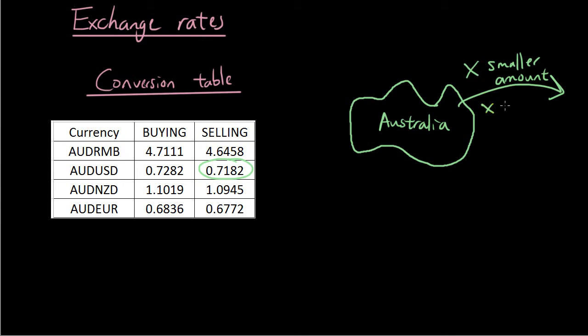If you want, I can write multiply by selling for this table, but some tables they might have buying and selling reversed because it depends on who's selling. Are you selling or is the shop selling something to you? We don't know. So just multiply by the smaller amount when you are converting from your home currency to another currency.